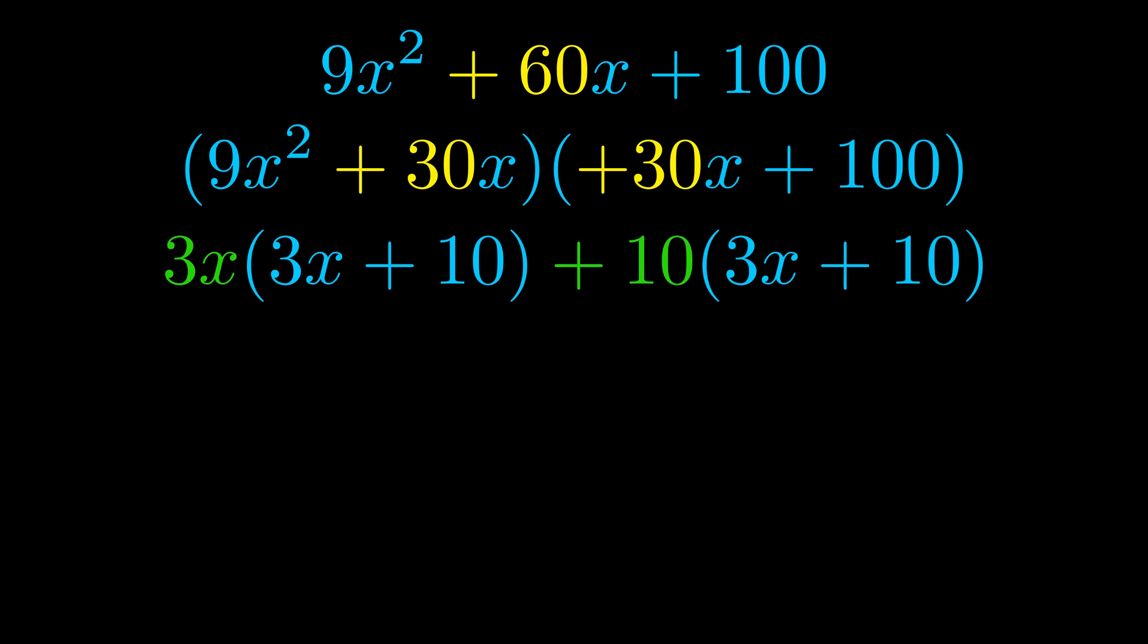Notice also how what remains inside of the parentheses is the same in both cases. The blue values are the same. Those blue values will become one of our factors and we will combine the two green values, the GCFs that we pulled out, to get the other one. And that is our fully factored equation.